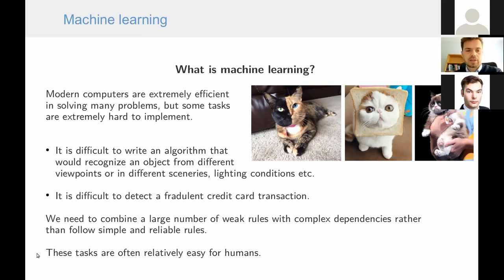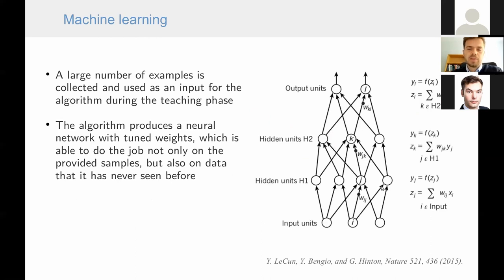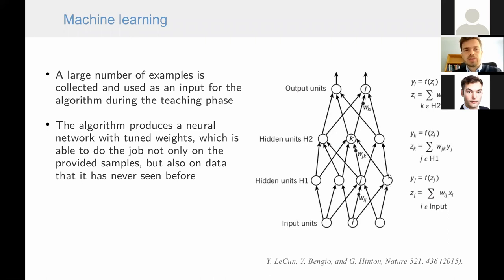On the other hand, these tasks are often very easy for humans. There has been a big breakthrough in recent years in machine learning, much of it coming from deep learning — learning with neural networks with many hidden layers. Instead of writing an algorithm to perform a task, we provide a large number of examples used as input to teach an artificial neural network.